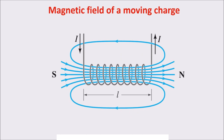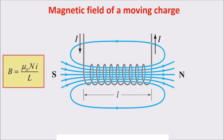Adding a lot of turns, we generate a strong magnetic field inside the solenoid. The magnetic lines of force go from the south pole to the north one. It is possible to calculate the magnetic field generated from a current. This is the formula for the magnetic field in the center of the solenoid: mu zero is the magnetic permeability of the air, N is the number of turns, L is the length of the device, and I is the electric current.